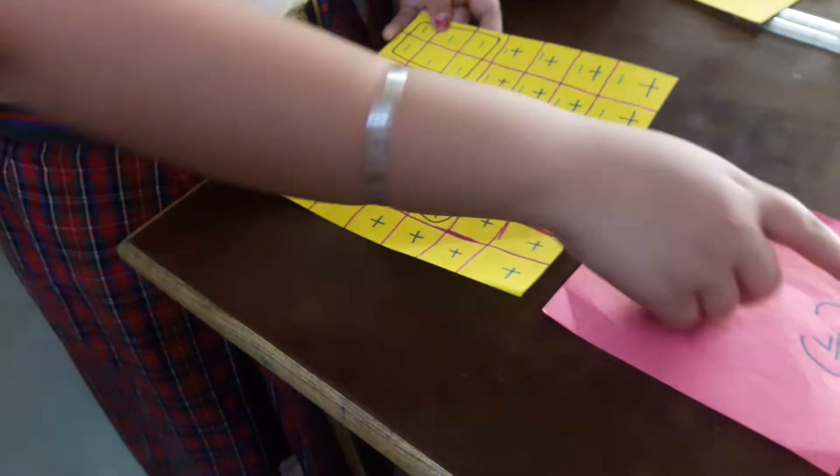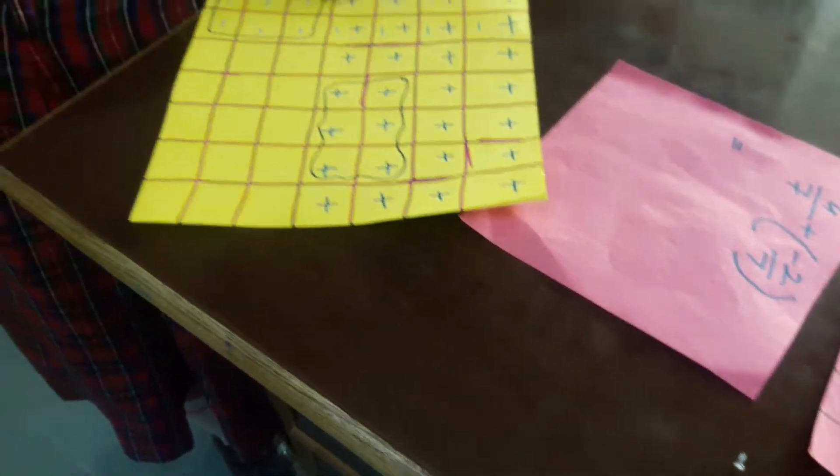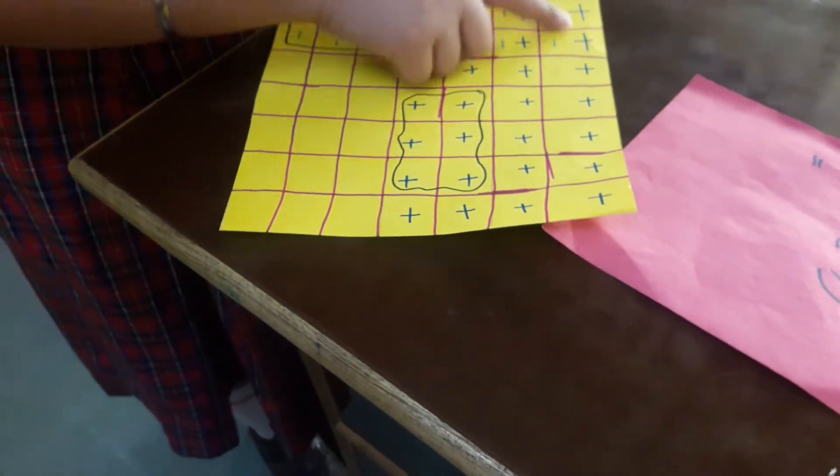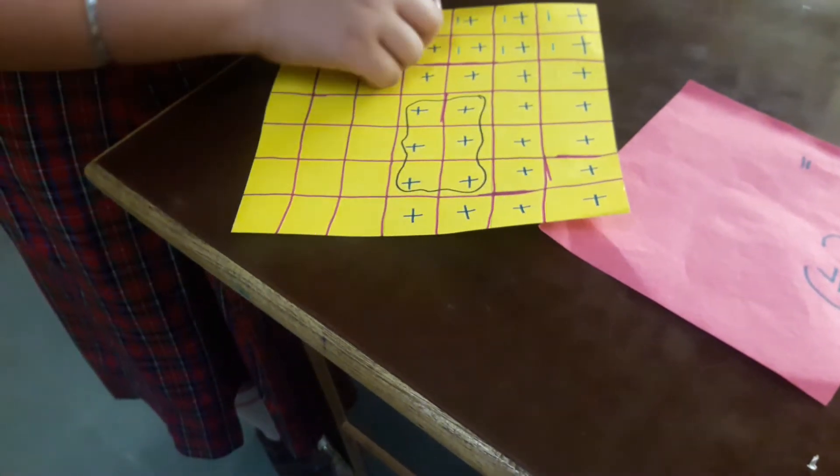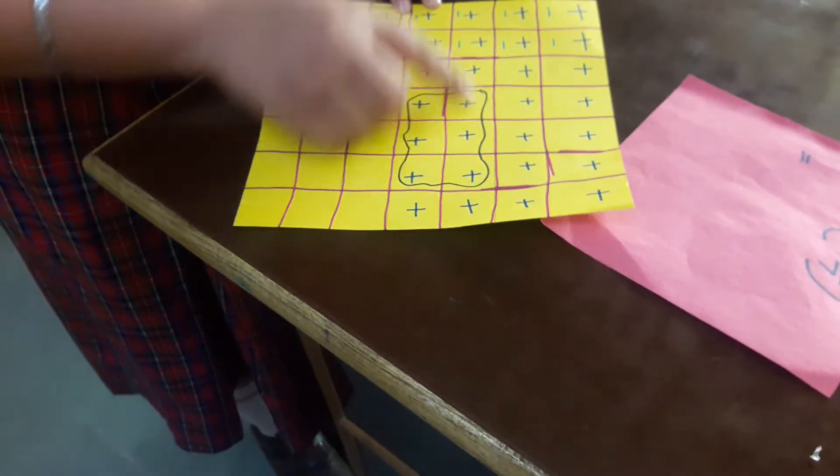Now the numerator is 4, so plus 4. We are going to mark the 4 rows by the plus sign: 1, 2, 3, 4.